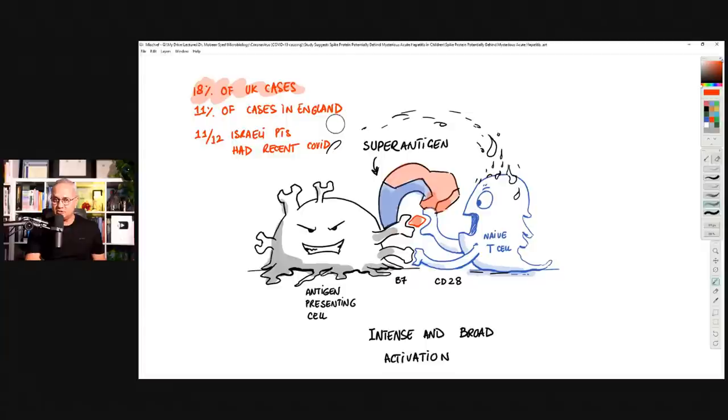Before I discuss more about this situation, I want to add one more thought in your mind and that is 18% of the cases, UK cases, of children with hepatitis had SARS-CoV-2. 11% of the cases from England had SARS-CoV-2 or had recently had SARS-CoV-2. In Israel, out of 12, 11 patients, not percent, 11 patients had SARS-CoV-2 recently. And the researchers say that if we continue to do more testing on the serology of these children, we would actually see that more and more children had, we would find out more children that they have SARS-CoV-2.